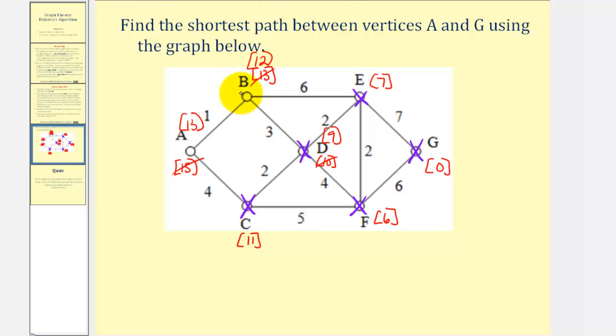So B is now visited, and we're done. So the shortest path from A to G is thirteen units, and that path would be A to B, B to D, D to E, and finally, E to G.